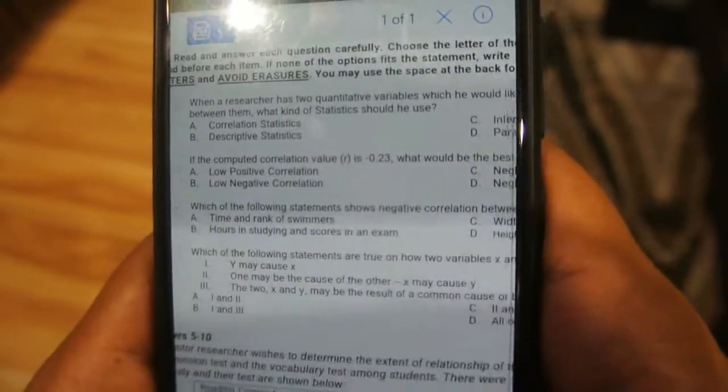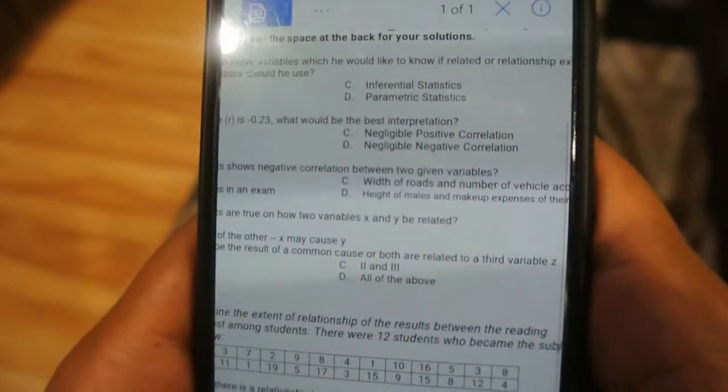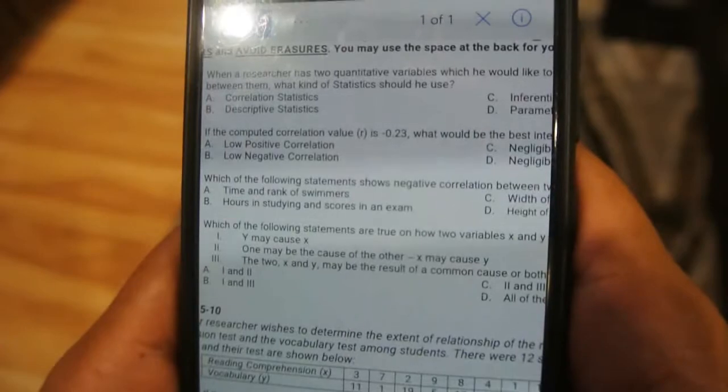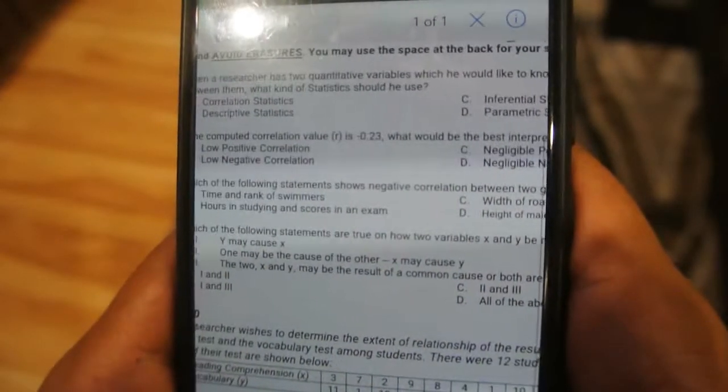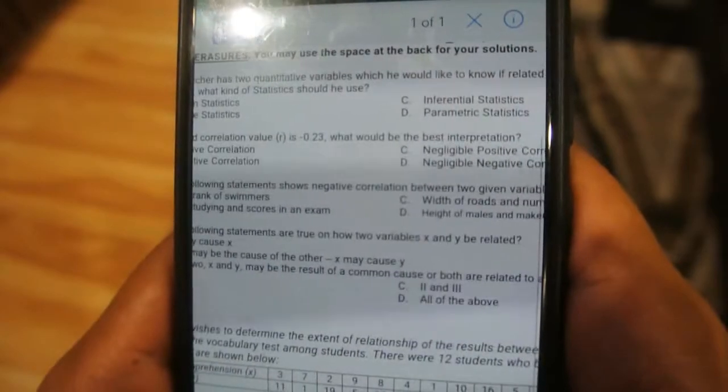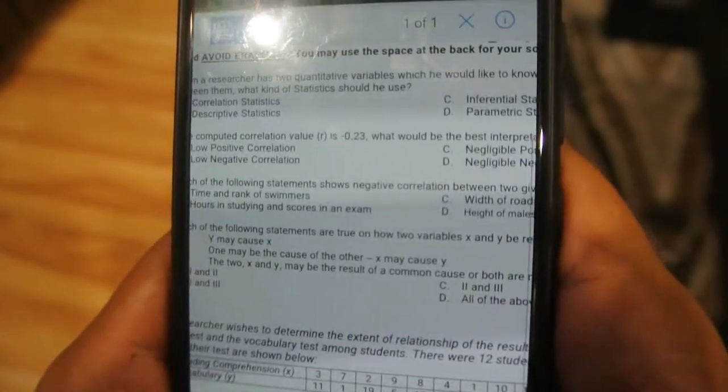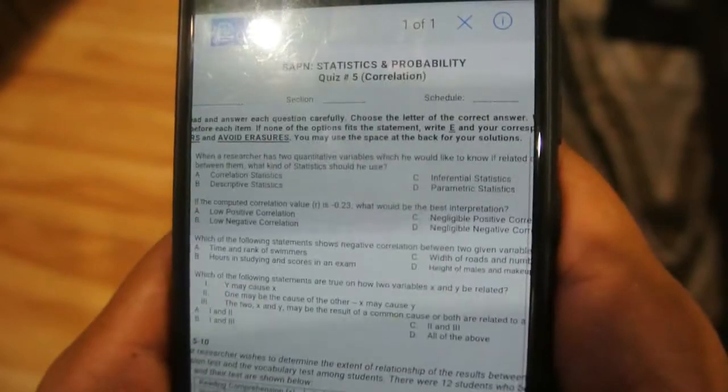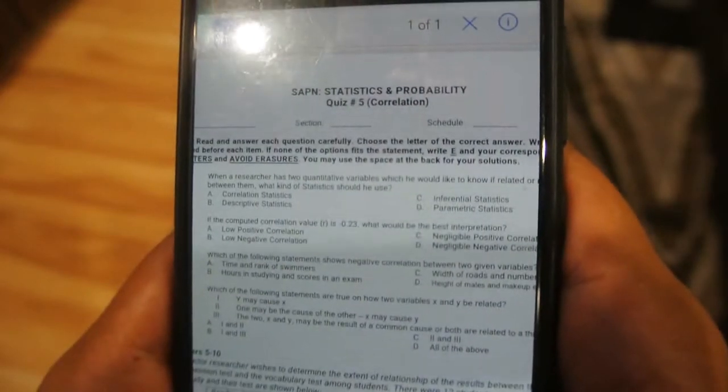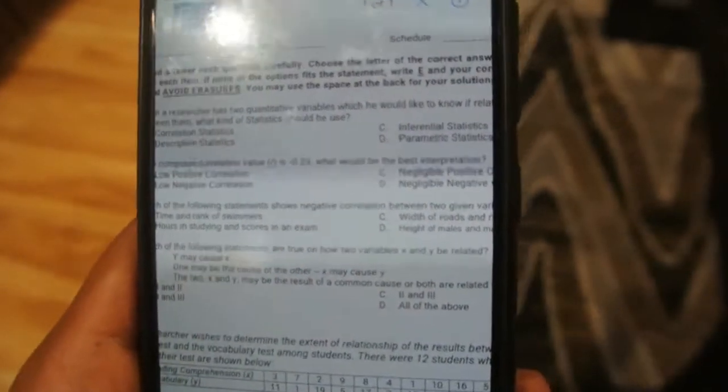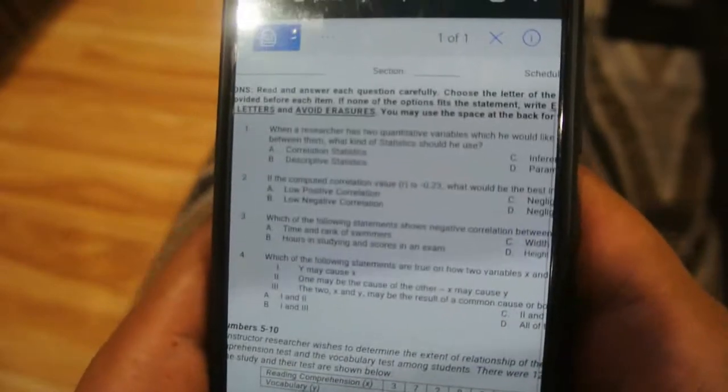Number 4, ito pa naman yung statements are true on how variable X and Y be related. Y may cause X, one may be the cause of the other, X may cause Y, or X and Y may be the result of the common cause, or both are related to the third variable Z. Pwedeng all of the above to, no? Lahat naman sila relevant eh, saka parang possible din namang yan.